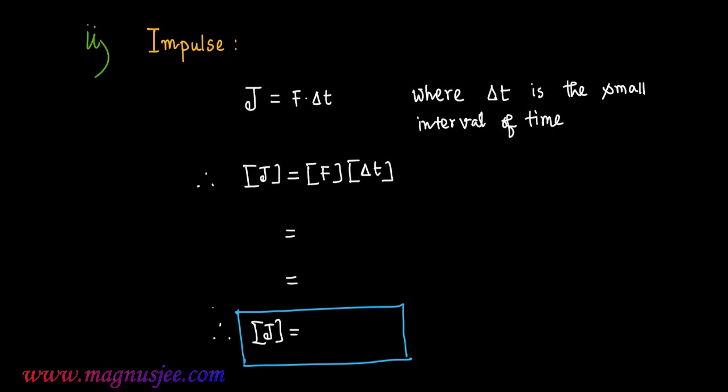Then we get the dimension of J as equal to MLT^-1. Dimension of F is MLT^-2.